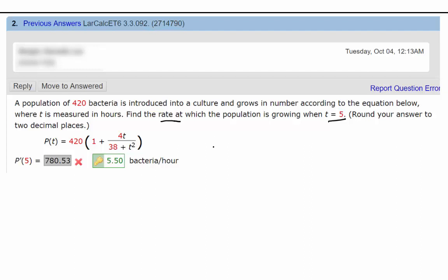I would use the quotient rule. You don't need a product rule here because there's no variable, right? Also, personally, I would probably just go ahead and distribute that because that 420 times 1 is 420 is going to go away anyway.